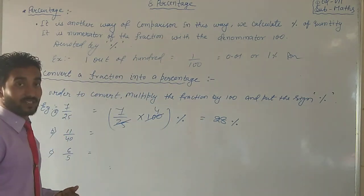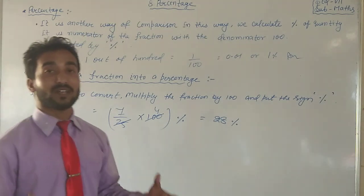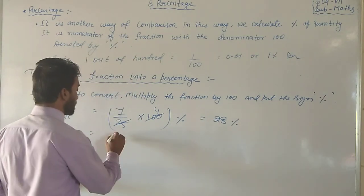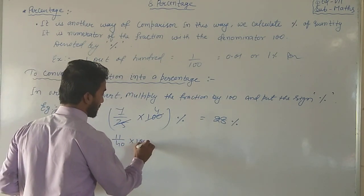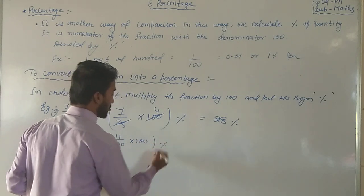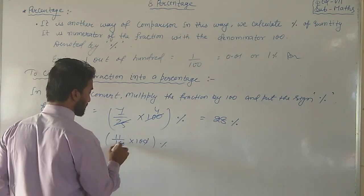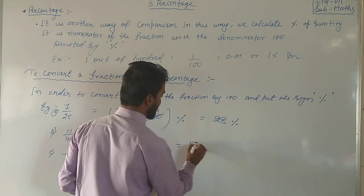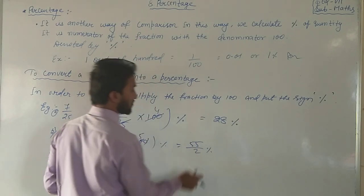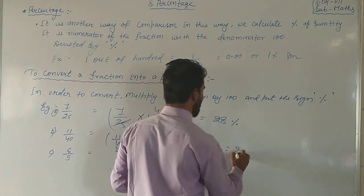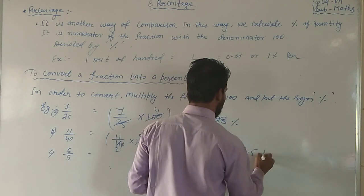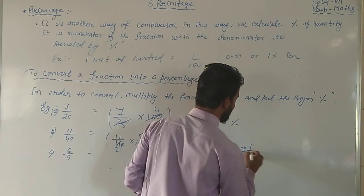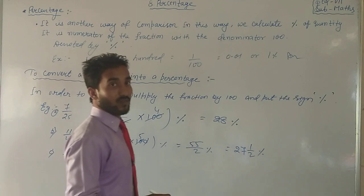Okay, see the next question. 11 by 40. Second question is that 11 by 40. So if somebody asks, 11 by 40 is what percentage of 100? Okay, so how it will be solved? Simple will be like 11 by 40 into 100, and after that we will put the symbol of percentage. Simple. 100 cancel, 2 2s are 4, 2 5s are 10. Okay, 11 5s are 55. 11 5s are 55 by 2. 55 by 2. 55 by 2%. It means we can say that 27.5. We can say that, or 0.5, we can say that 27.5 percentage also.